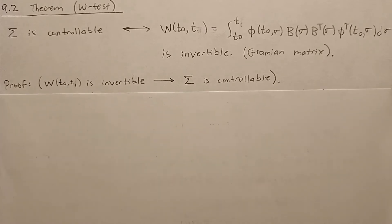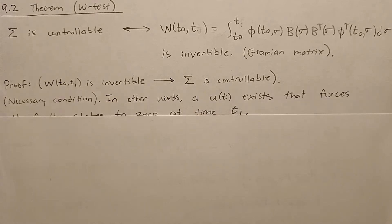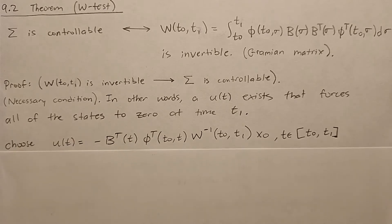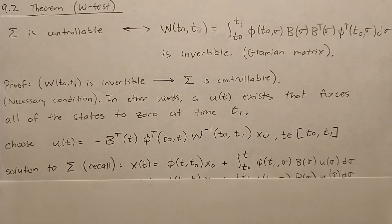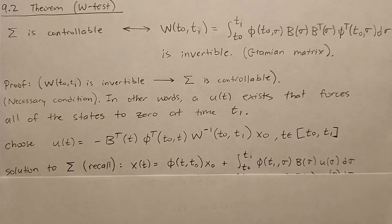This is the first direction: we're showing that if the Gramian is invertible, then sigma must be controllable. We need to find an input signal U(t) that forces all of the states to 0 at time T1. We're going to choose U(t) to be the expression from the textbook. Remember that the solution to a linear time-varying system is: X(t) = φ(t, T0)·X0 plus the integral from T0 to T of φ(T, σ)·B(σ)·U(σ) dσ.